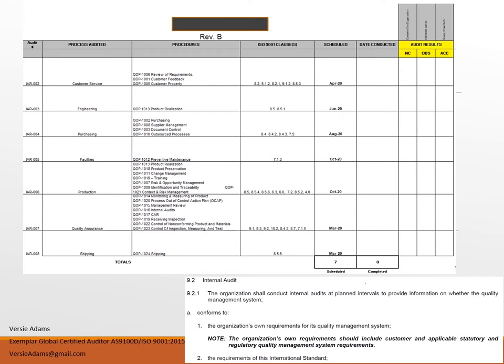The very first section of 9.2.1 states the organization shall conduct internal audits at planned intervals. What we have here is an internal audit schedule planned out for the entire year of 2020. This organization has scheduled their audits based on the process — your audits should be process-based. The second column states 'process audited,' and they have customer service, engineering, purchasing, facilities, production, quality assurance, and shipping. The next column lists the applicable procedures that will be audited with those processes.